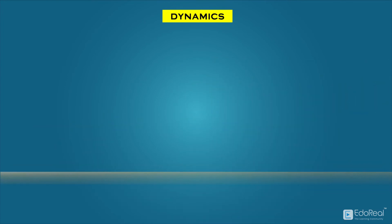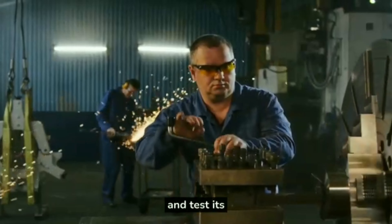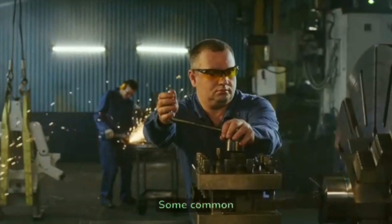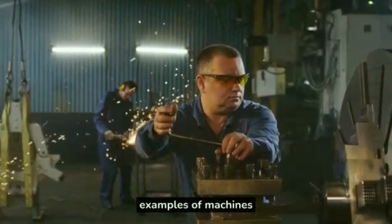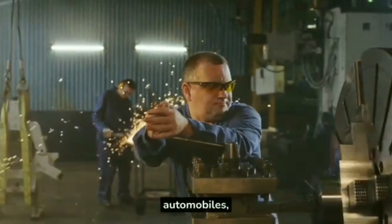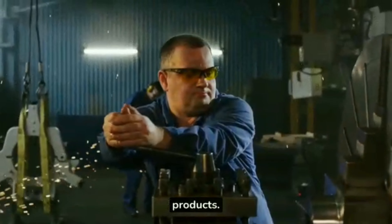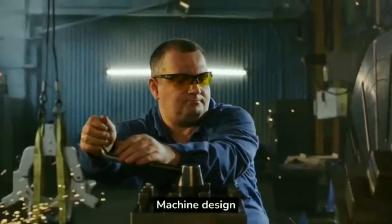C. Kinematics — this branch deals with the study of motion without considering the forces that cause the motion. D. Fluid Mechanics — this branch deals with the study of fluids in motion and the forces that act upon them. Understanding the principles of mechanics is crucial for designing machines that are functional, efficient, and reliable. It helps engineers to predict how a machine will behave under different conditions and make necessary adjustments to ensure its performance.